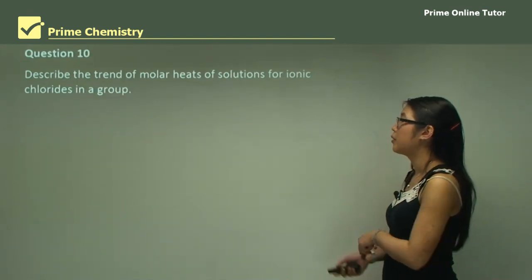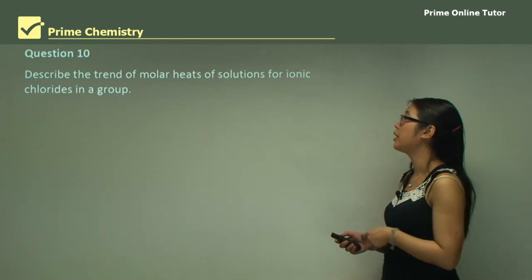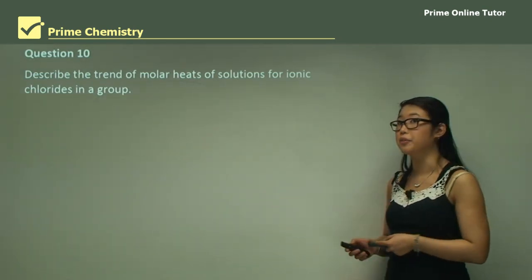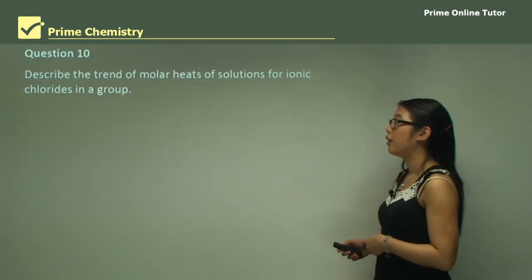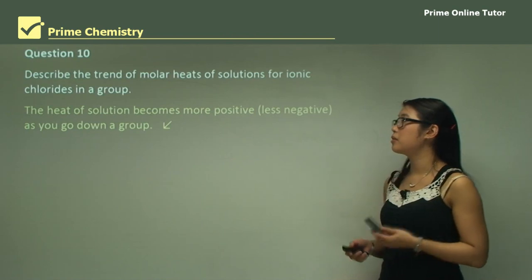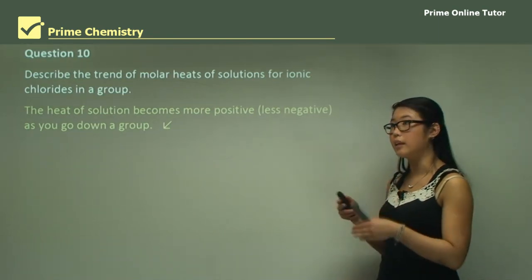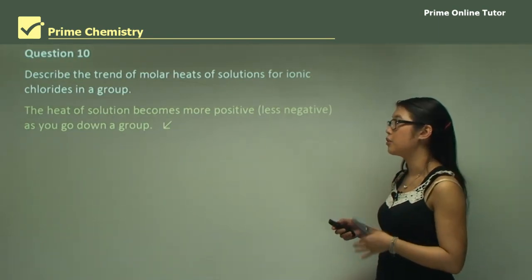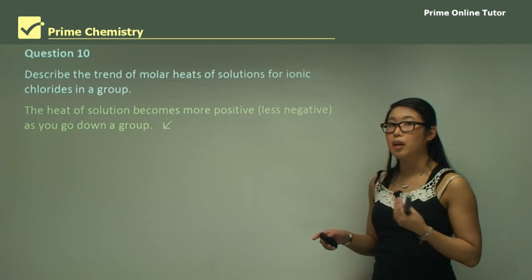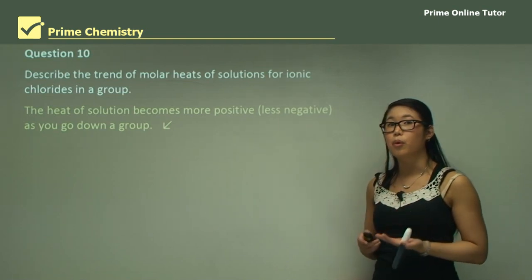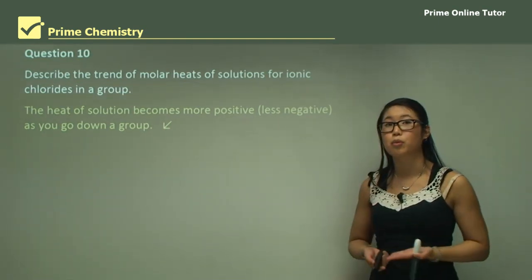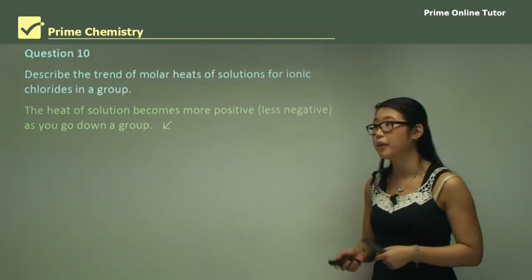Question ten: describe the trend of molar heat of solution for ionic chlorides in a group. The heat of solution becomes more positive — less negative — as you go down a group, meaning it becomes more and more endothermic.